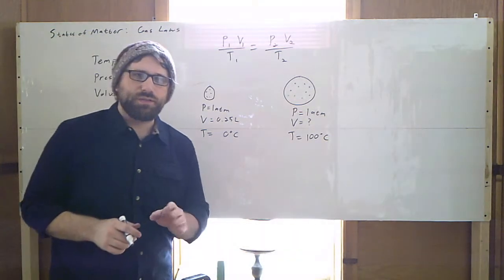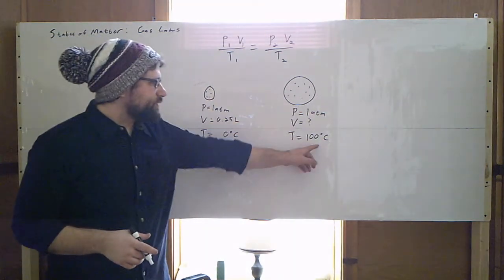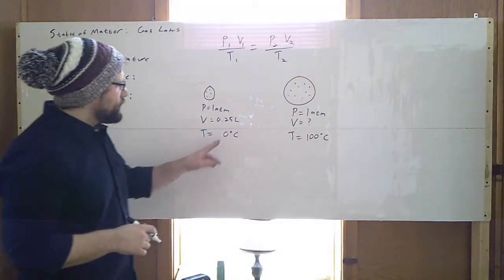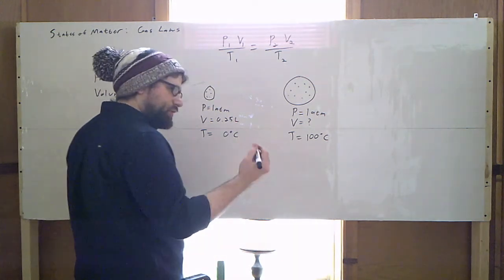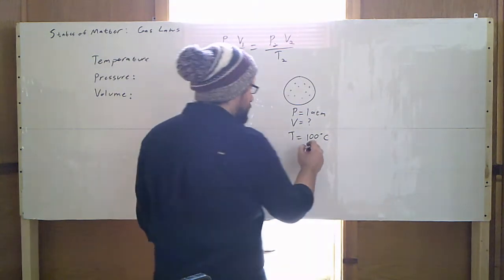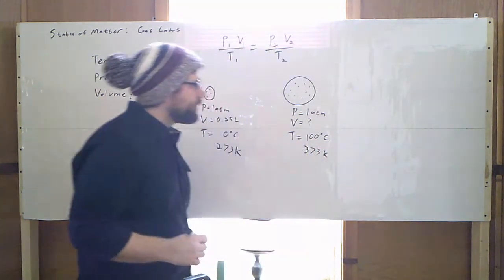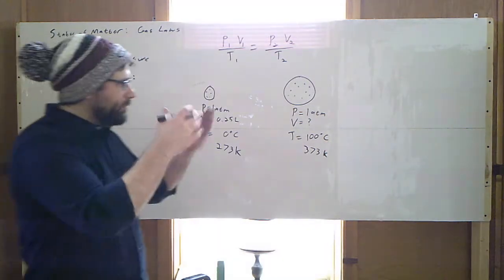First thing we need to do, in almost all of these problems, the first thing you're going to need to do, convert that Celsius to Kelvin. So 0 degrees Celsius, add 273, it's going to be 273 Kelvins. 100, 373. Now we just take our numbers, plug them into our equations.